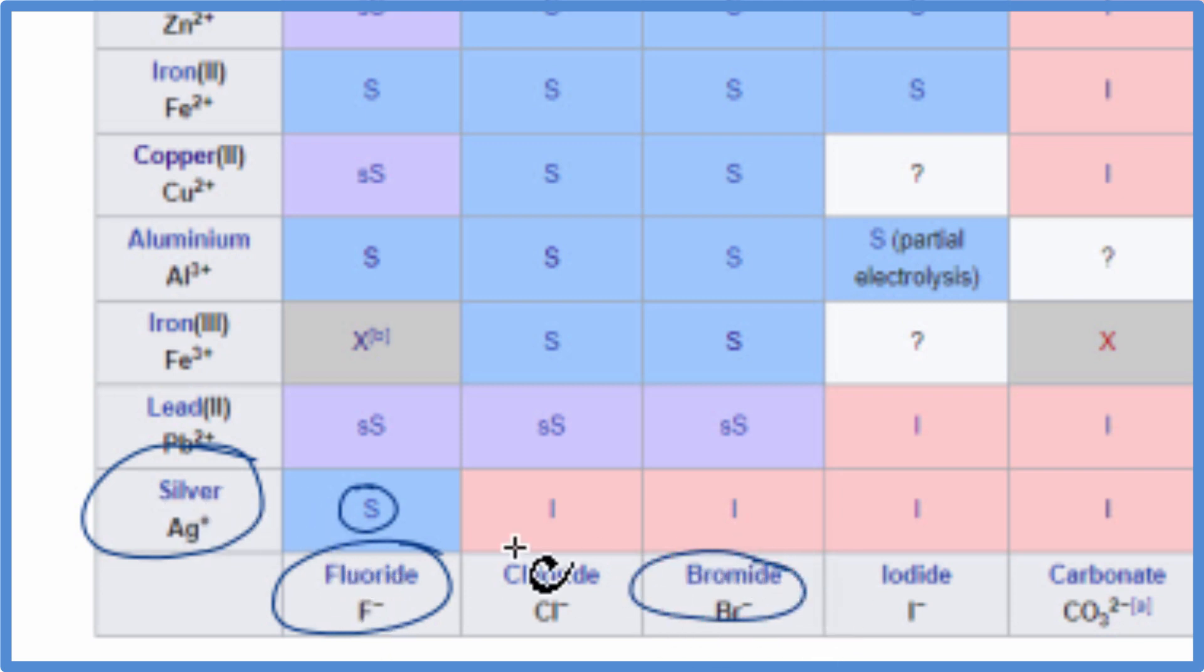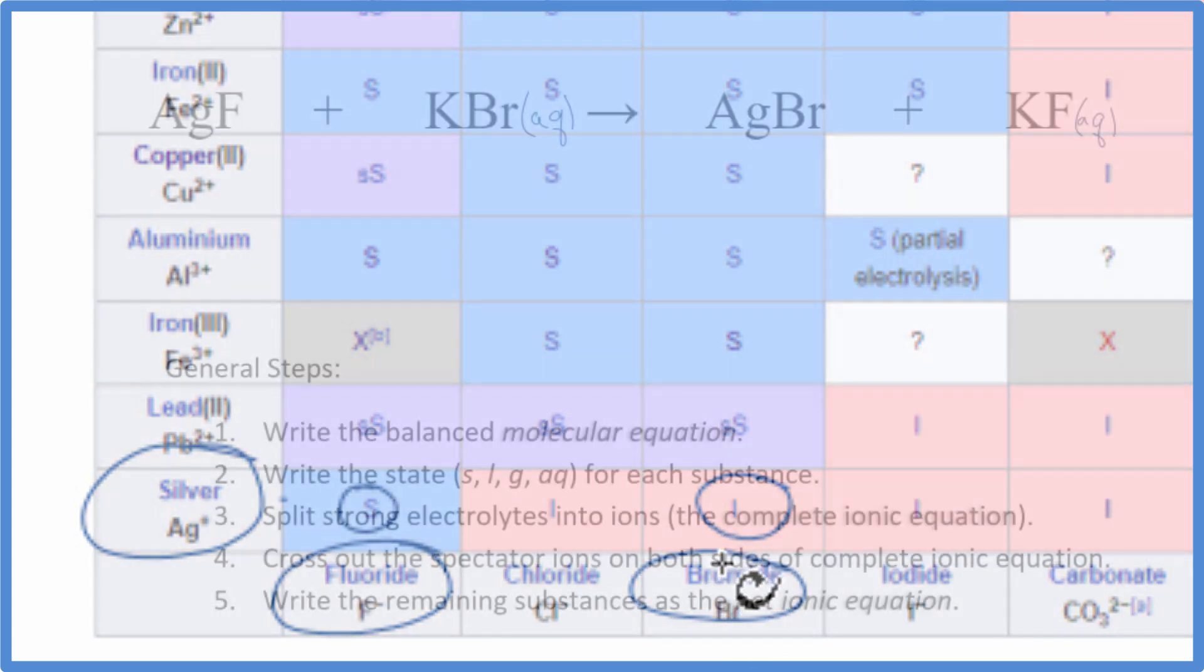We look at the bromide, so we kind of go over here. Here's our silver bromide. It says I. It's insoluble. So silver bromide is going to be insoluble. It'll be a solid. Let's go back to our equation.